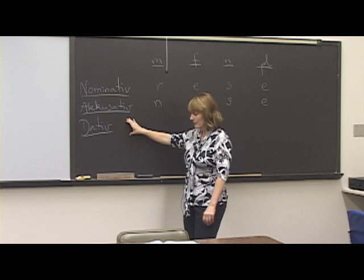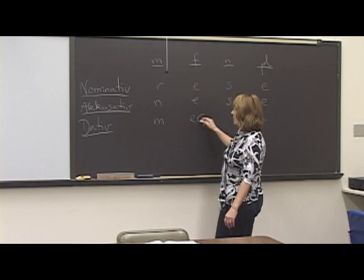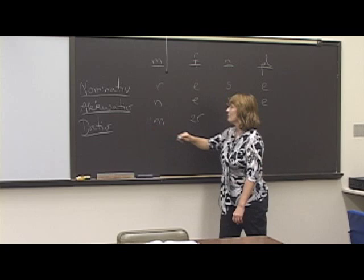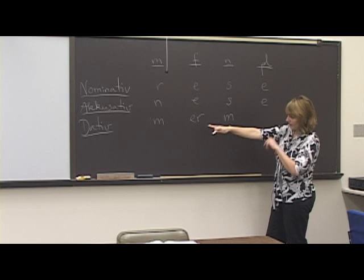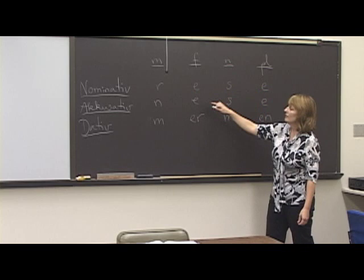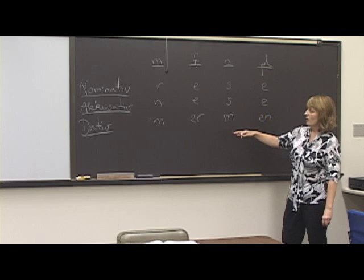The dative is used for the indirect object of the sentence. The endings for the der-words are: dem for masculine and neuter, der for feminine, and den for plural. The neutral gender has the same endings as the masculine. If you just remember 'Resi Nesi Merman,' you know the endings to all the der-words in the three cases we've studied. Nominative: Resi. Accusative: Nesi. Dative: Merman.